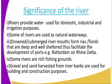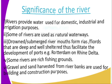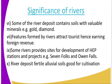Number five, gravel and sand harvested from river beds are used for building and construction purposes. Some river deposits contain soils with valuable minerals — an example being gold. Number seven, features formed by rivers attract tourists, hence earning foreign revenue and foreign exchange. Number nine, some rivers provide sites for the development of hydroelectric power stations and projects, such as the Seven Forks. Number ten, rivers deposit fertile alluvial soils that are rich for agriculture.